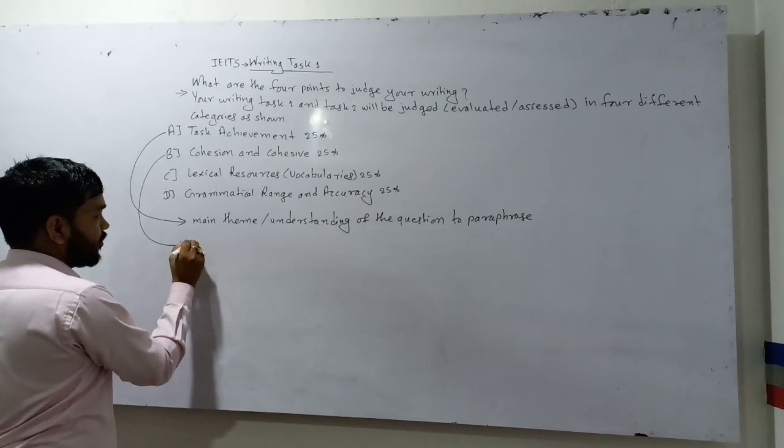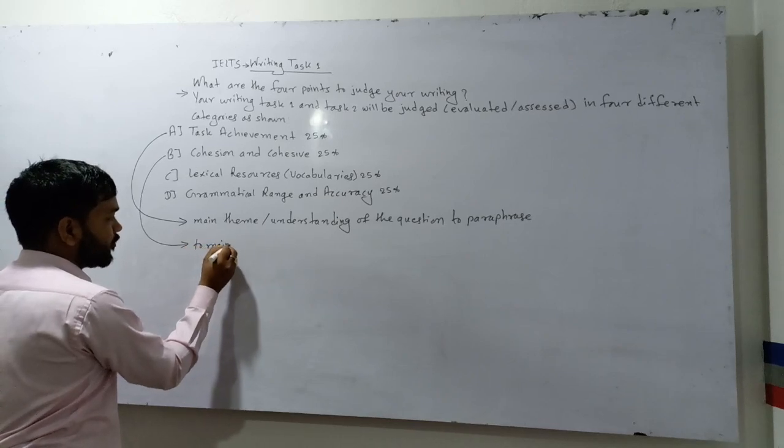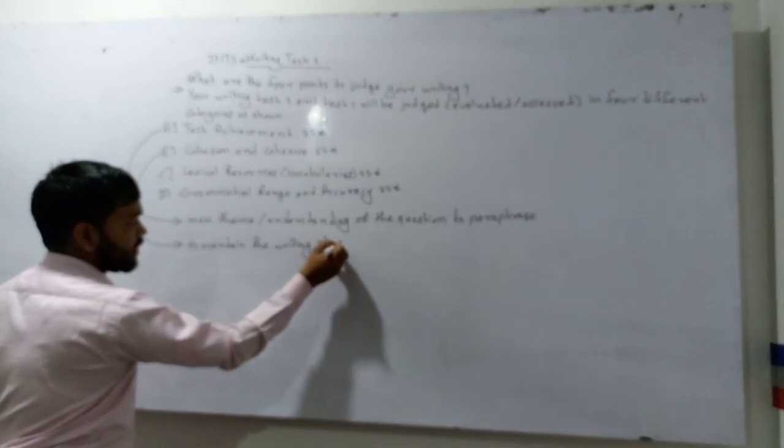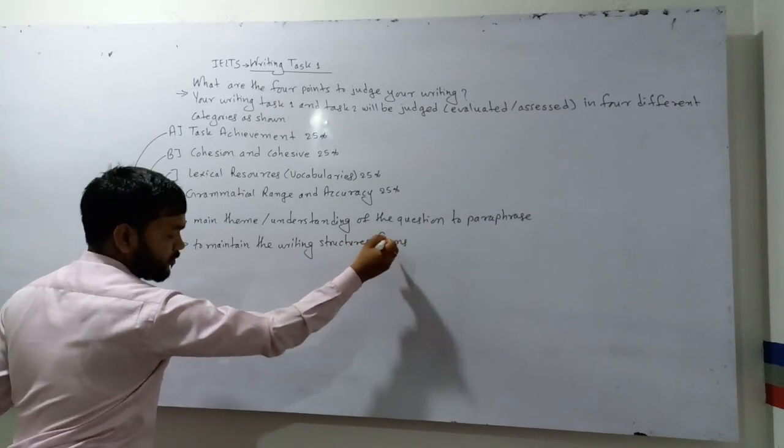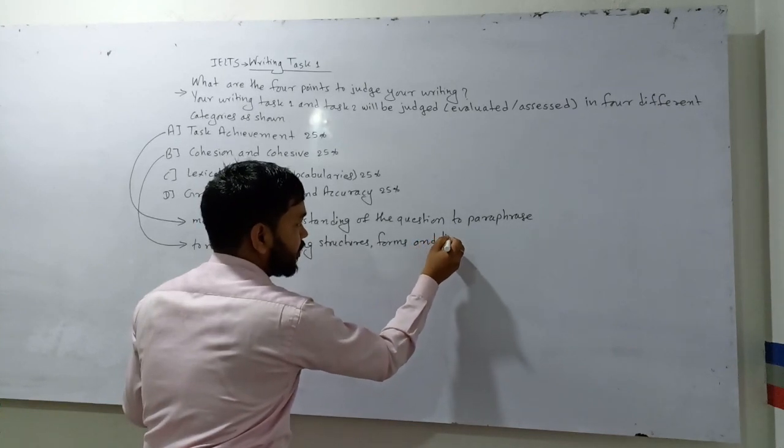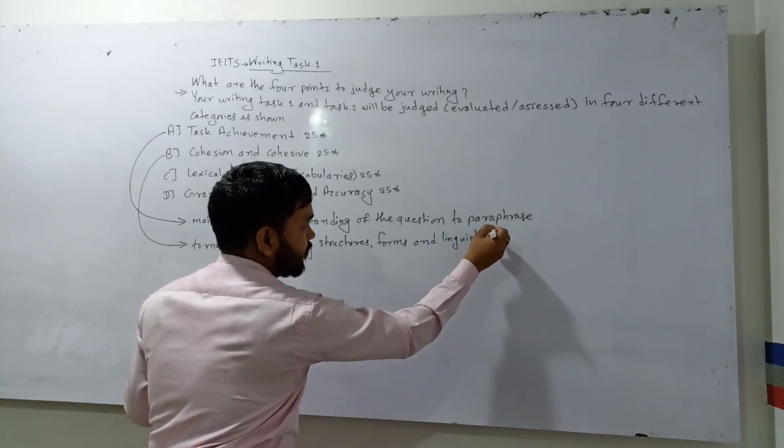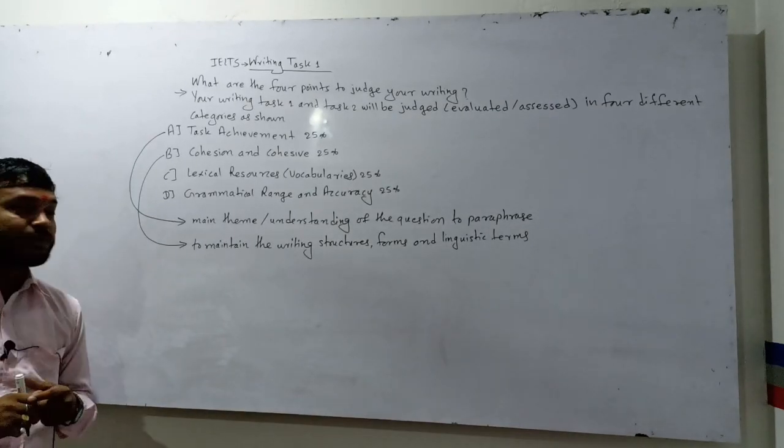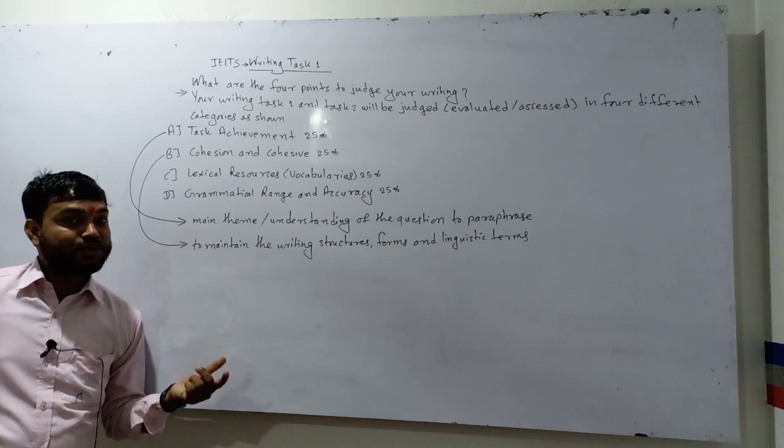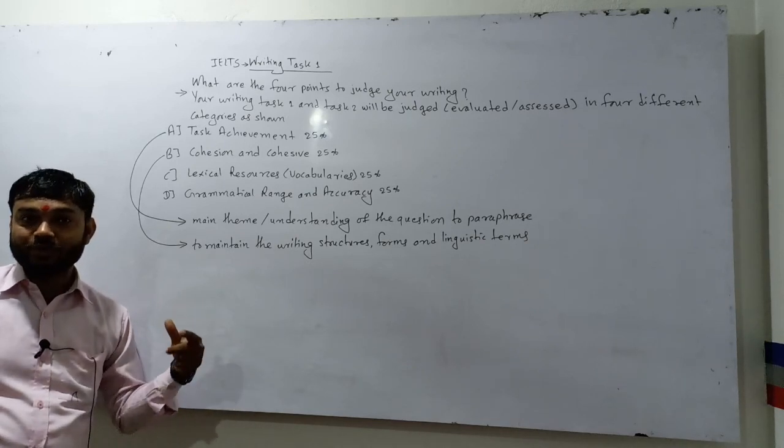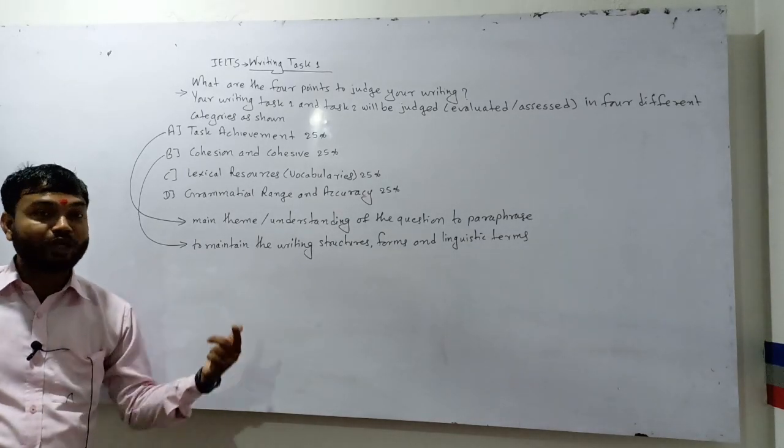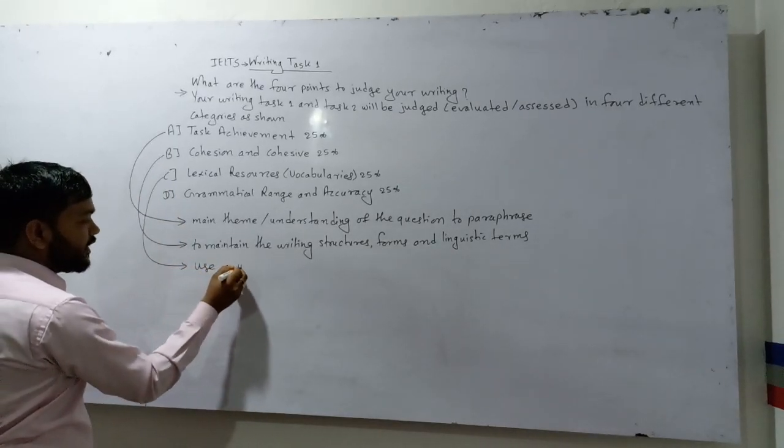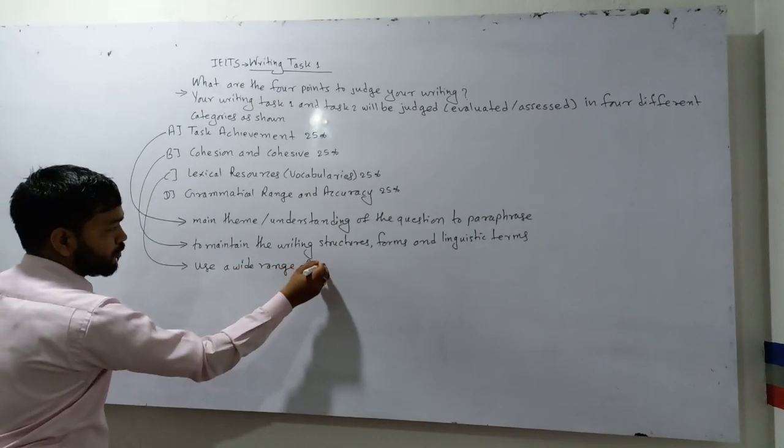The third is called Lexical Resources. This means vocabularies. IELTS writing is a test of your use of vocabularies and similar words, which are called synonyms. Always remember in your writing you should use a wide range of vocabularies and synonyms.